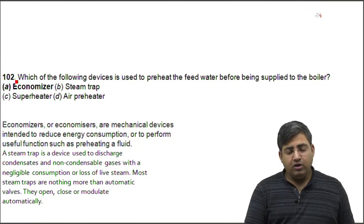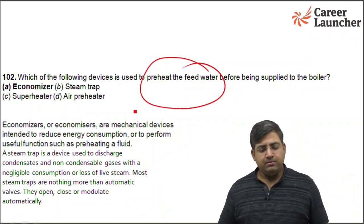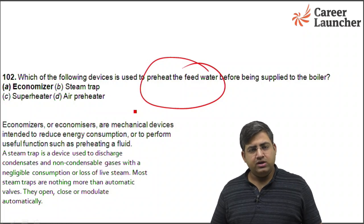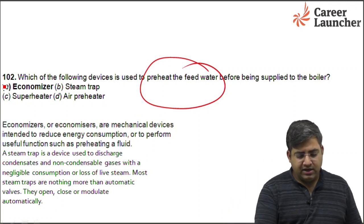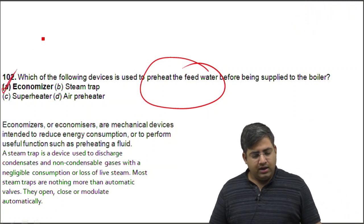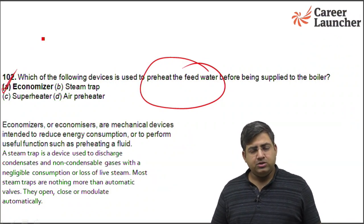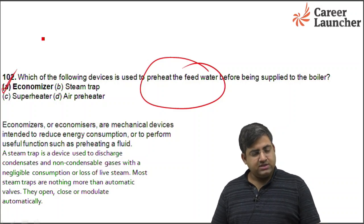The next question: which of the following devices is used to preheat the feed water before being supplied to the boiler? We know that the economizer is the device used to increase the temperature of feed water supplied to the boiler, so the right answer is A. A superheater increases the temperature of steam, making it superheated steam. The answer for Q102 is A.